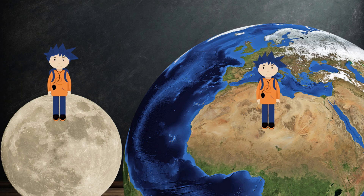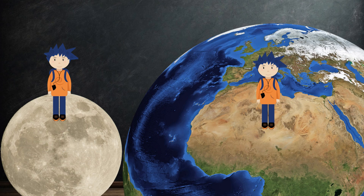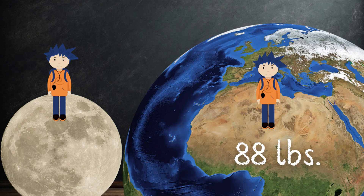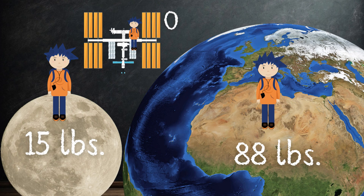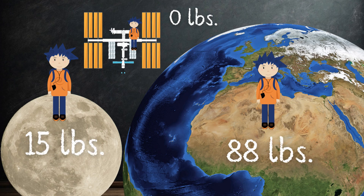Let's say you have a mass of 40 kilograms on earth. Your mass would still be 40 kilograms on the moon — there is still the same amount of matter inside your body no matter where you go. Now let's consider weight. Say you weigh 88 pounds on earth. You would weigh one-sixth of that on the moon, or just under 15 pounds. At the international space station, zero pounds. No gravity means no weight. Your mass has not changed, but your weight has because of gravity.